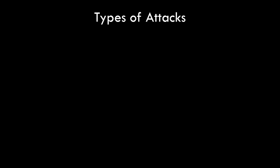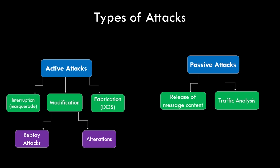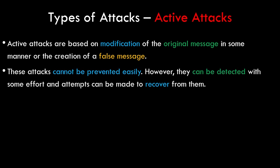Depending on how the attacks take place, they are categorized into two types: active attacks and passive attacks. Active attacks are further categorized as interruption, modification, and fabrication — and modification is further classified as replay attacks and alteration. Passive attacks are categorized into release of message content and traffic analysis. Active attacks are based on modification of the original message or creation of a false message. These attacks cannot be prevented easily; however, they can be detected.